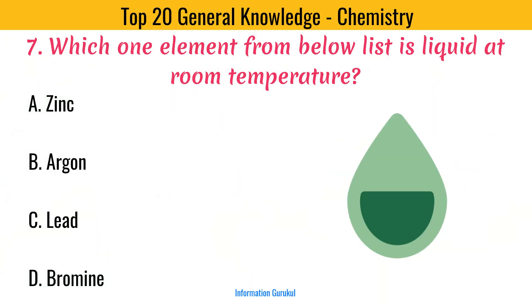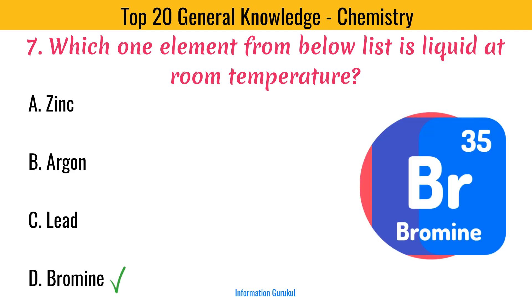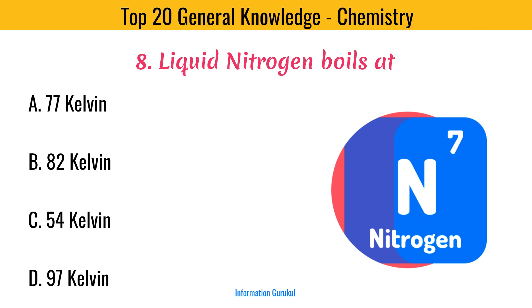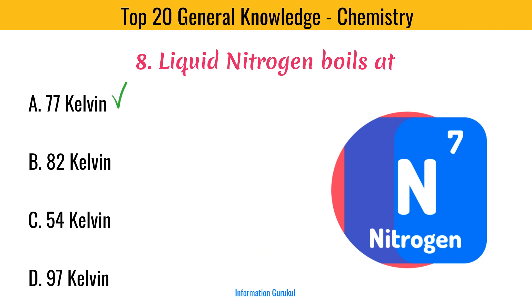Which one element from the list below is liquid at room temperature? Bromine. Liquid nitrogen boils at 77 Kelvin.